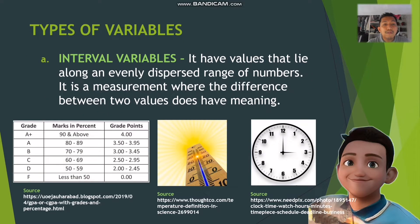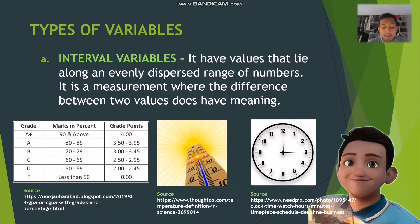Interval variables have values that lie along an evenly dispersed range of numbers. It is a measurement where the difference between two values does have meaning. Examples include CGPA, temperature, and time. In interval measurement, there is a difference between measurements but no true zero.